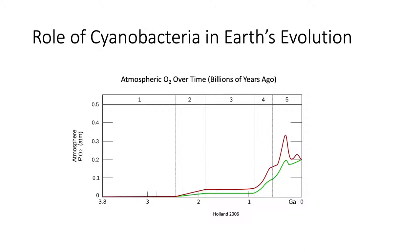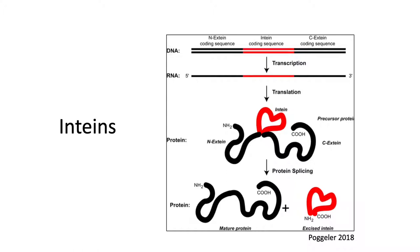In trying to learn more about the evolution of cyanobacteria, I'm interested in the distribution and function of intines within this phylum. Intines are genetic elements that reside inside important housekeeping genes in the genome. As we see at the top of this figure, if this is the DNA sequence — the genomic DNA — we see the intine coding sequence sandwiched between the extines.